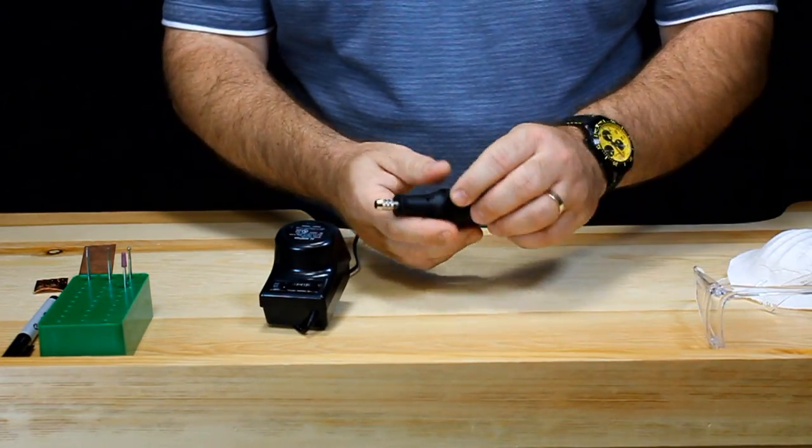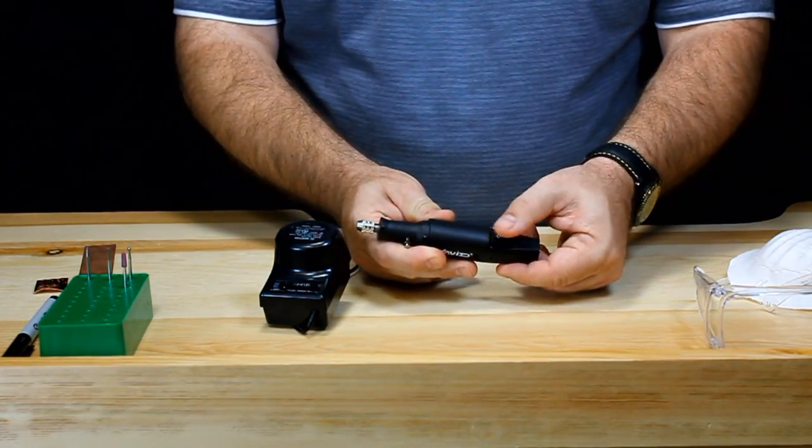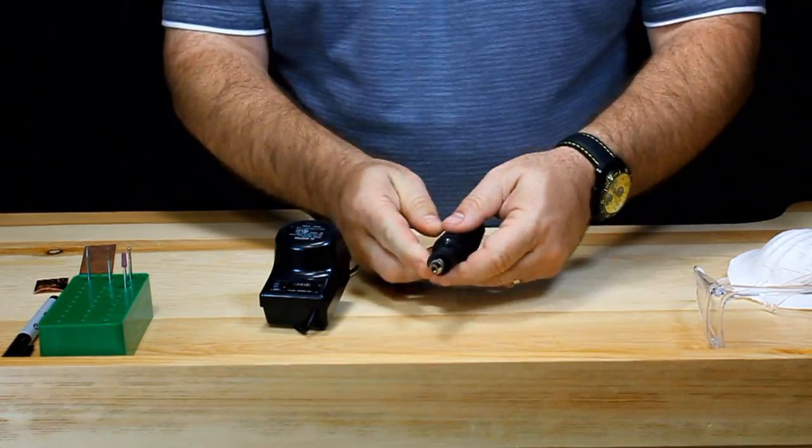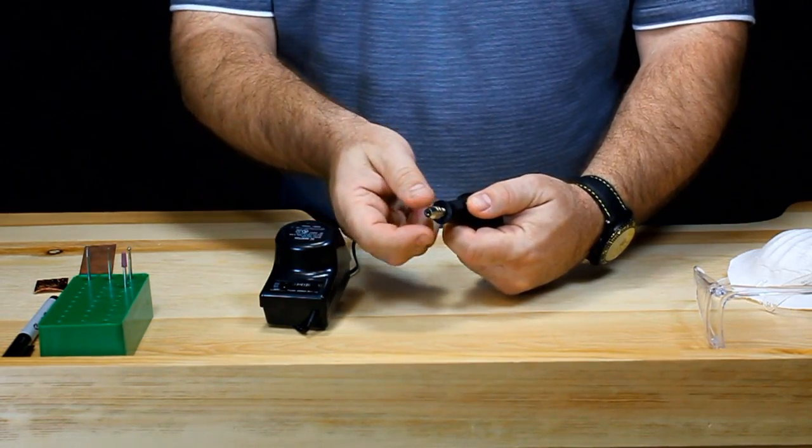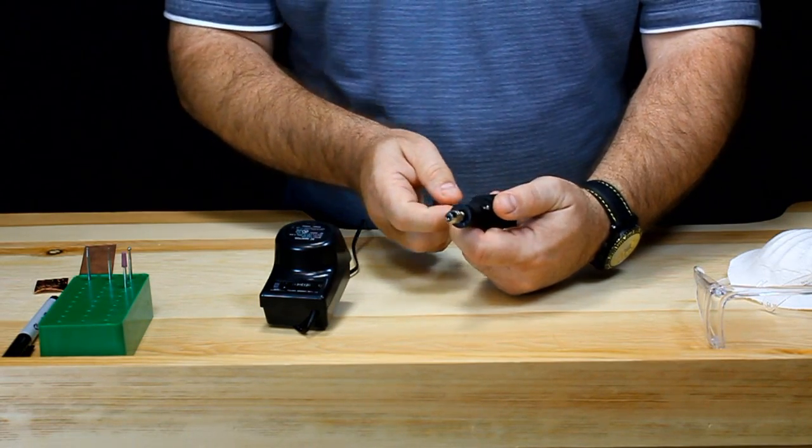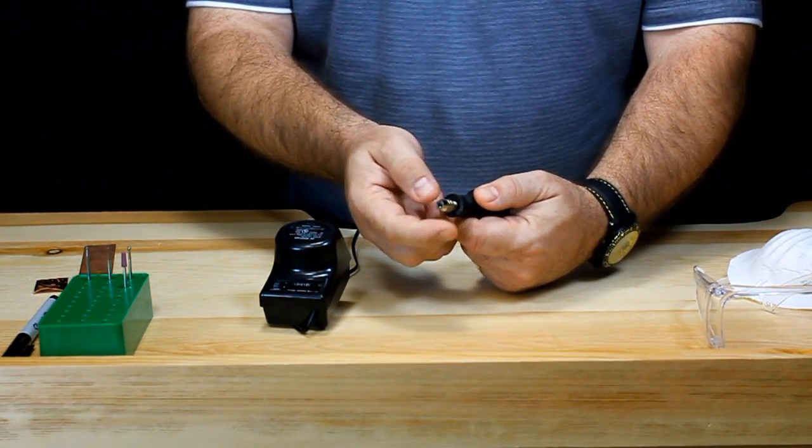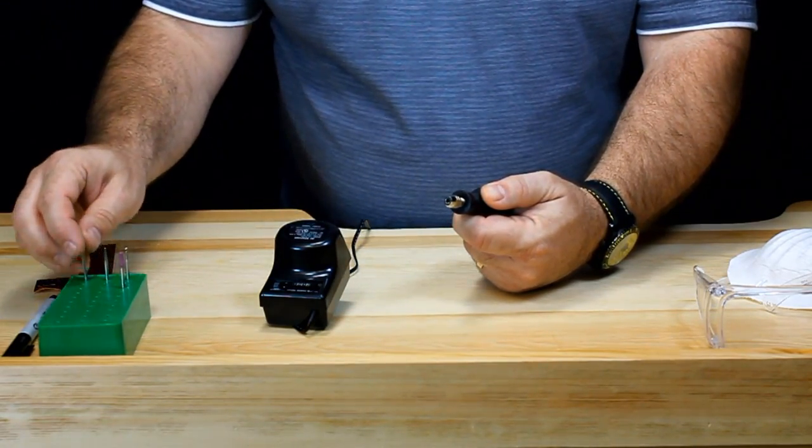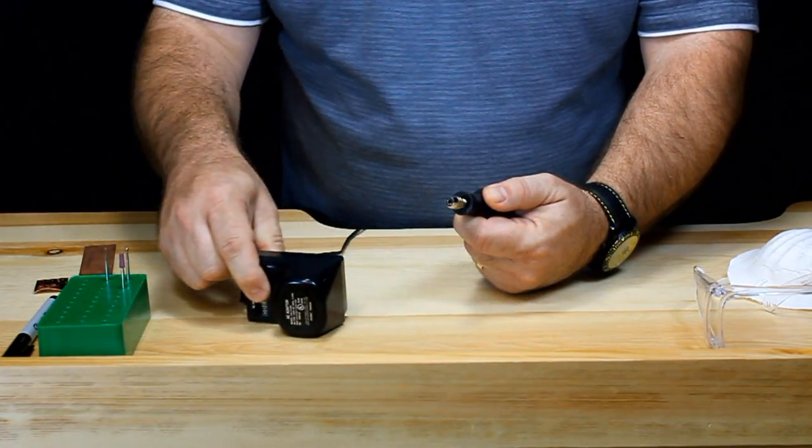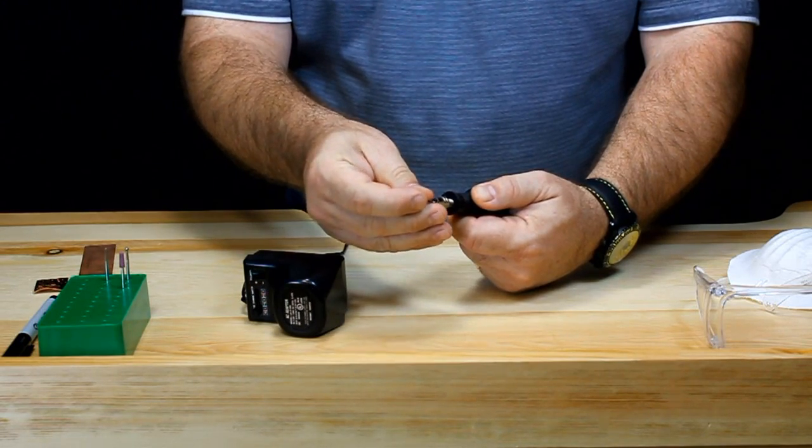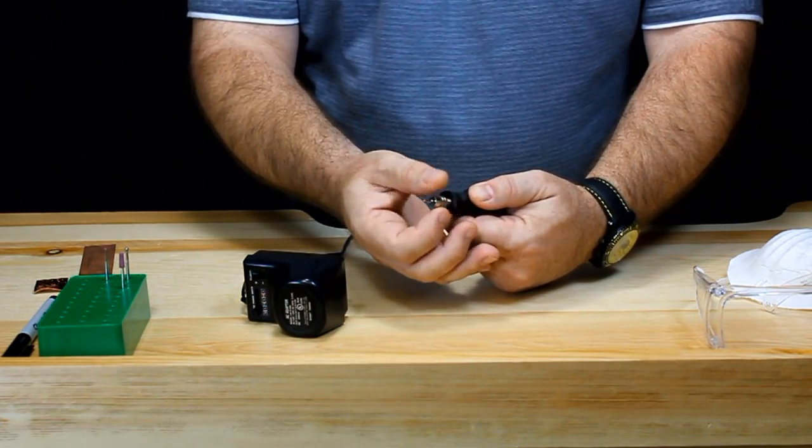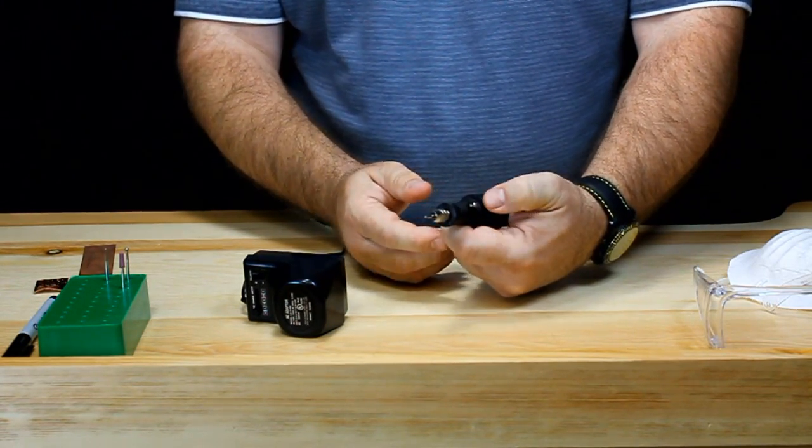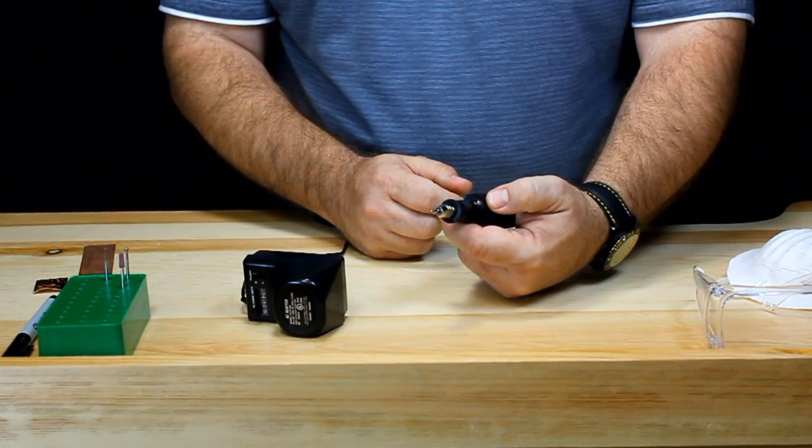Now the handpiece itself is very easy to use. It's got an on-off switch here on the back which I hope I don't have to explain to you. But it also has a silver button up here which allows you to change the collet on the handpiece. By depressing this you're able to unscrew the top portion here and loosen it and you can put in your diamond burr. Then tighten it by hand, let go of the silver button and now it's locked in place and ready to go.